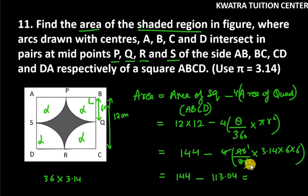Now you have to subtract 113.04 from 144. So this is 30.96 cm square. This is the area of shaded portion under PQRS.